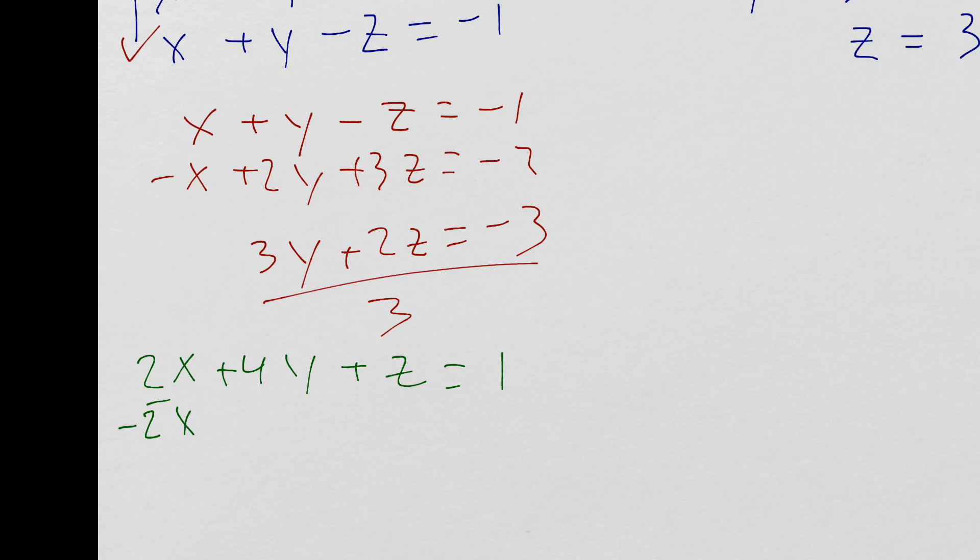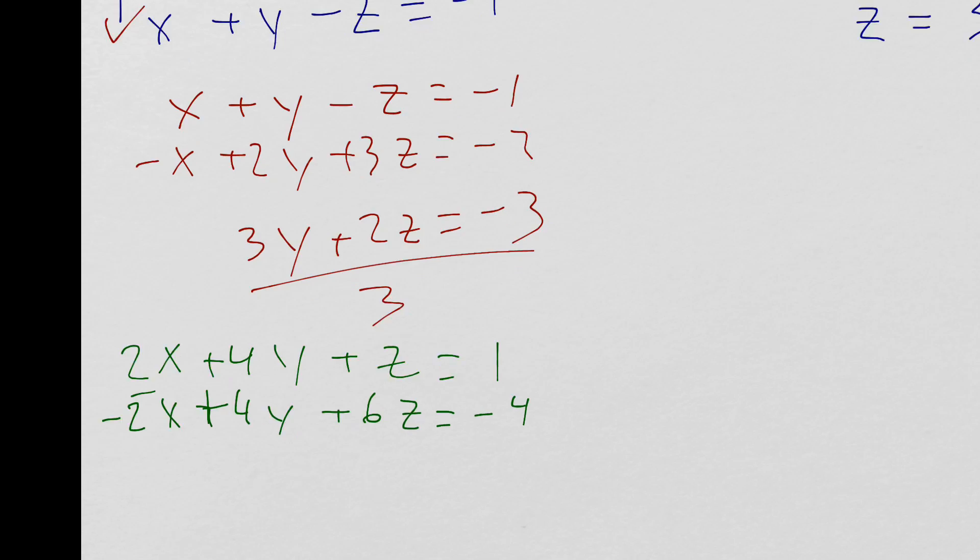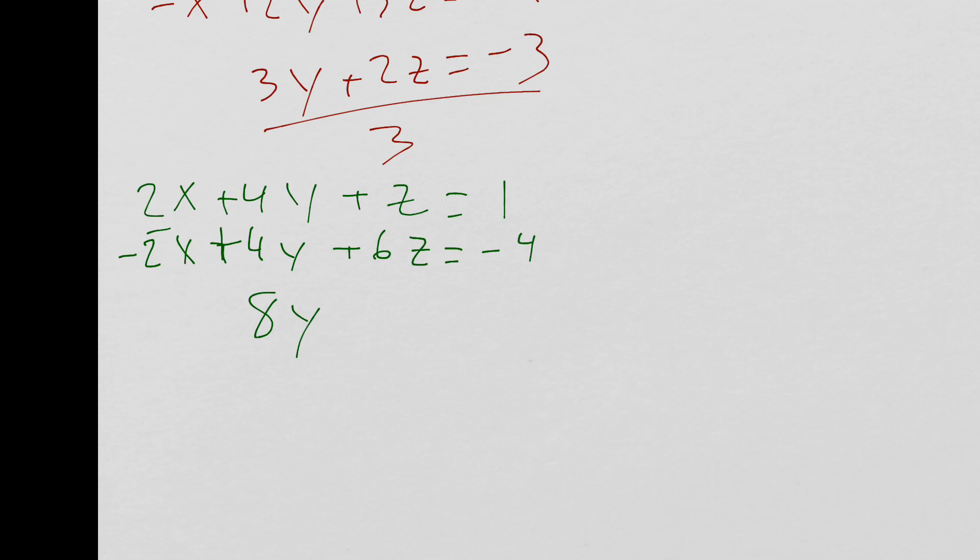So I get negative 2x plus 4y plus 6z equals negative 4. Adding these two equations together, I get 8y plus 7z equals negative 3.